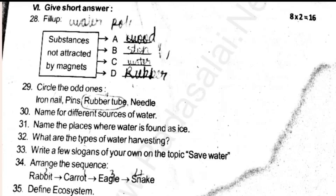The circles are very simple. Name the different sources of water. Name the places where water is found as ice. What are the types of water harvesting? Write a few slogans on the topic of water.